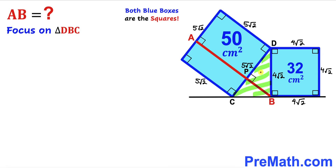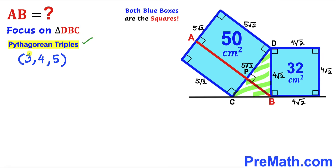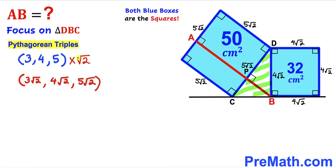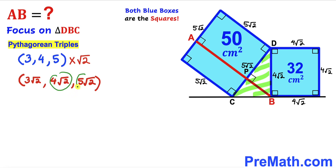Now we focus on right triangle DBC whose known side lengths are 4√2 and 5√2, and we calculate the third leg. Recalling the well-known Pythagorean triplet 3, 4, 5 and multiplying by √2 across the board, our new Pythagorean triplet becomes 3√2, 4√2, and 5√2. Since 4√2 and 5√2 are given, the third unknown side length is 3√2.